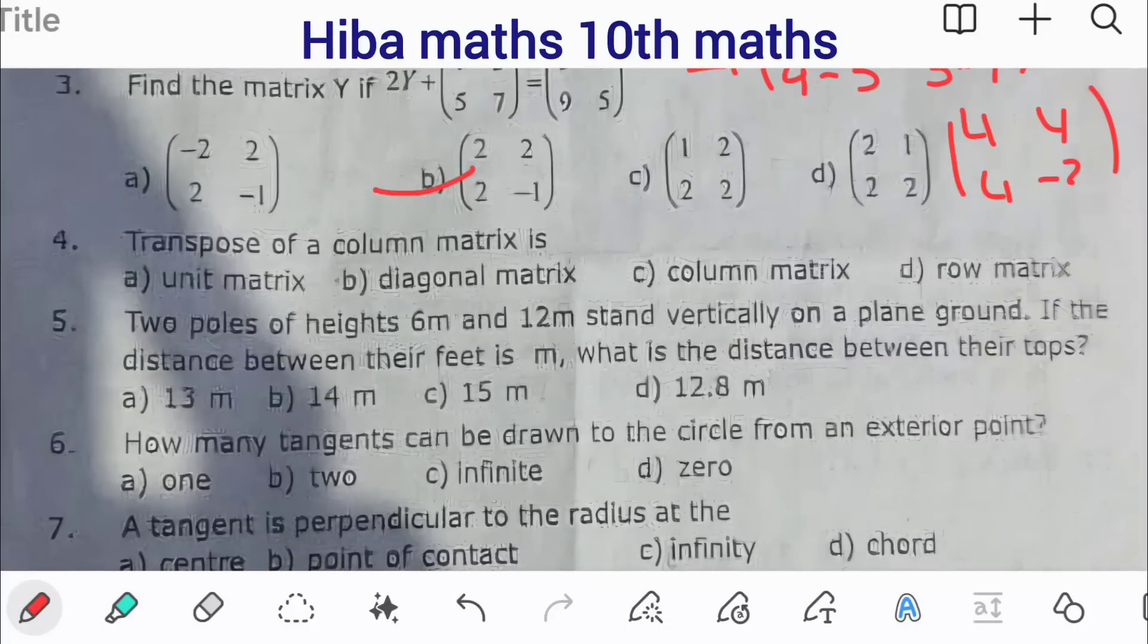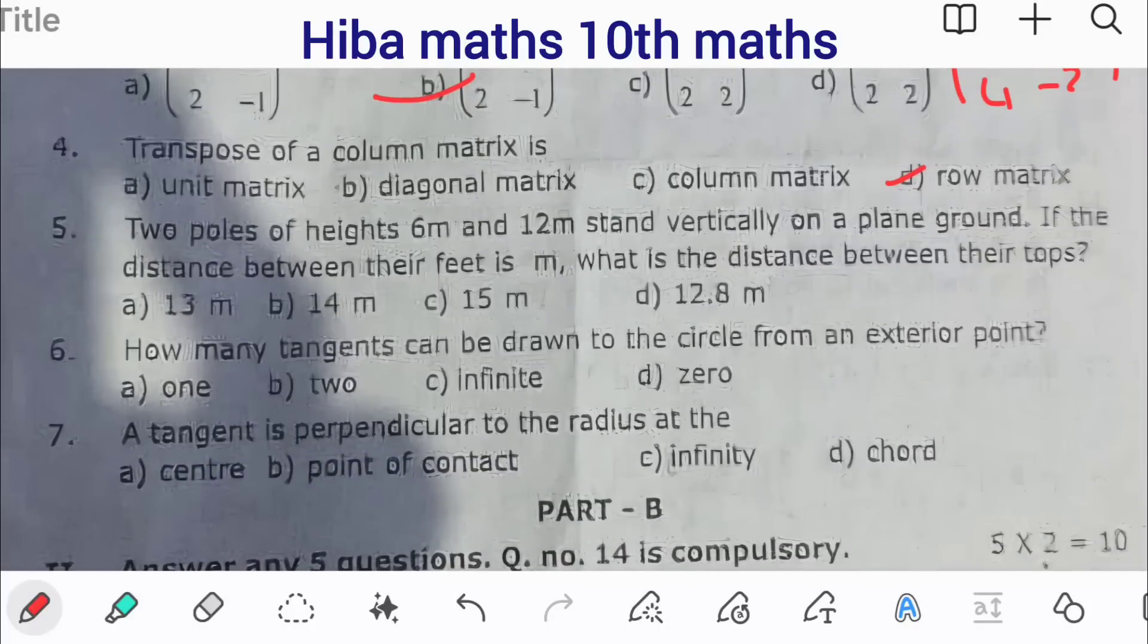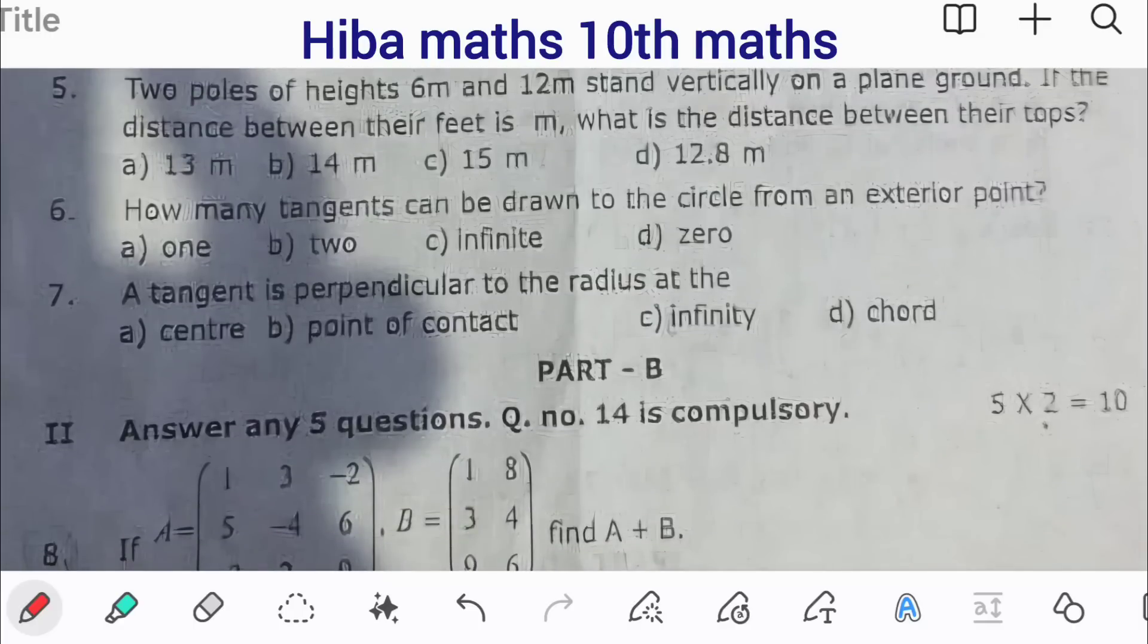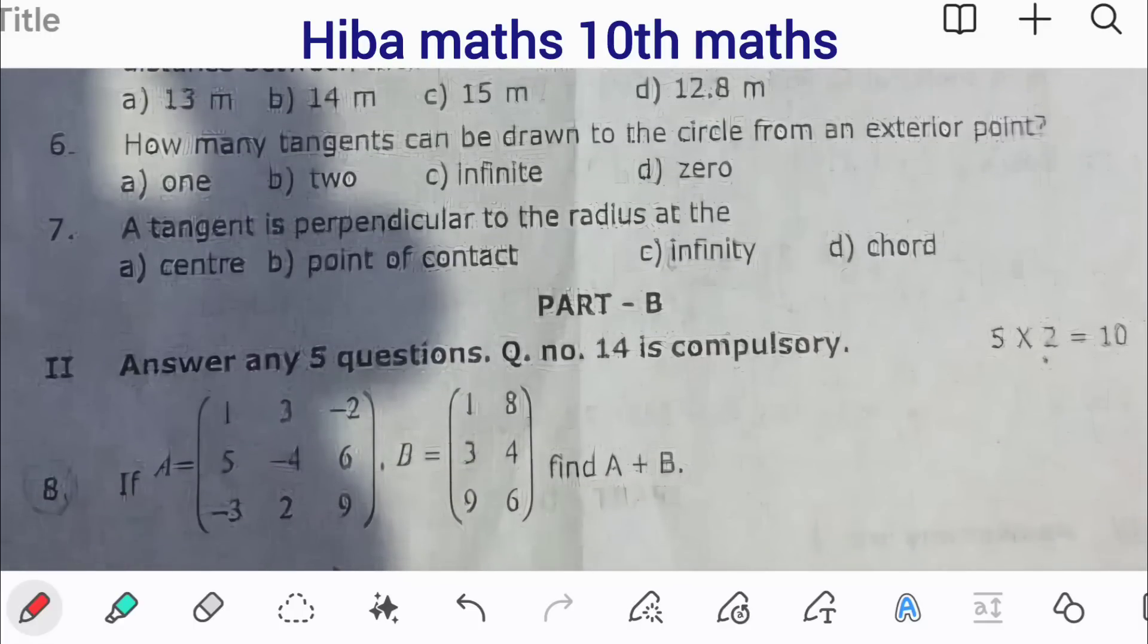The transpose of a column matrix is a row matrix. Next question: Two poles of height 6 meters and 12 meters stand vertically on plane ground. What is the distance between their tops? How many tangents can be drawn to a circle from an exterior point? The tangent is perpendicular to the radius at the point of contact.